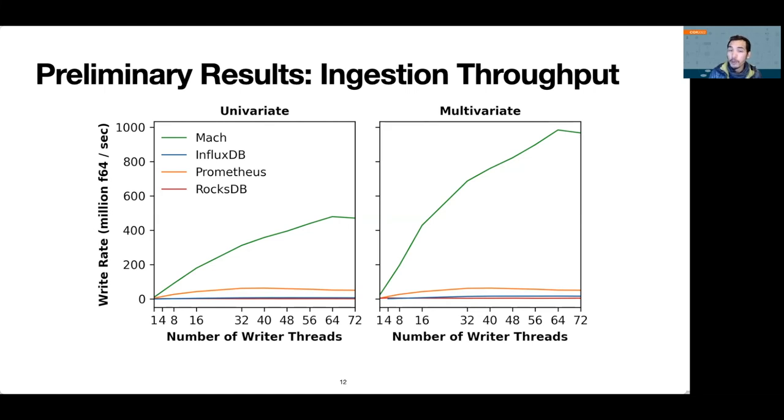First, we evaluated how Mach's loose coordination scales with the number of writers. The x-axis shows the number of writer threads, and the y-axis shows write throughput in millions of floats per second. We compare Mach in green with Prometheus in orange, InfluxDB in blue, and RocksDB in red. We run the experiment with univariate data on the left and multivariate data on the right. We have three key takeaways. First, we see that with one thread, Mach is about two times faster than Prometheus due to our efficient write path. However, Mach scales far better with more writers than Prometheus.